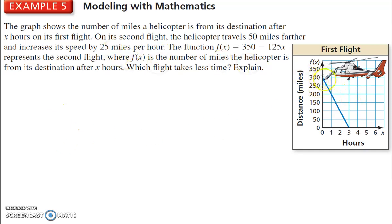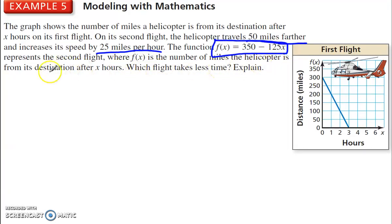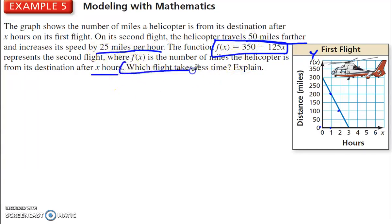Example 5. The graph shows the number of miles a helicopter is from its destination after x hours on its first flight. On its second flight, the helicopter travels 50 miles further and increases its speed by 25 miles per hour. The function f of x equals 350 minus 125x represents the second flight, where f of x is the number of miles the helicopter is from its destination after x hours. So after 1 hour it is 200 miles away; after 2 hours, 100 miles away.